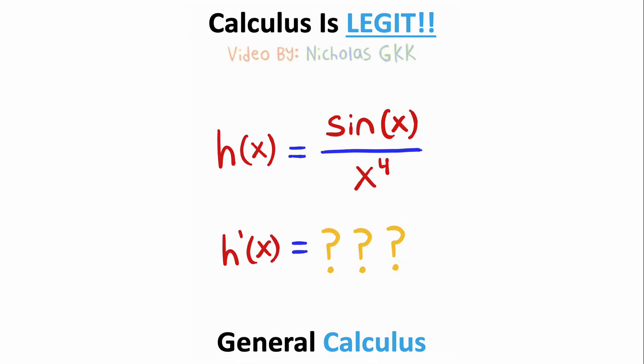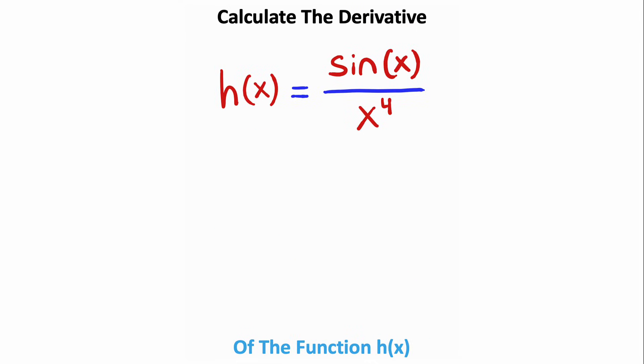Let's see how fast we can solve this calculus problem. We are asked to find the derivative of this function h of x. Now, I notice that we have two functions of x in the top and bottom of a fraction. For these situations, you can use something called the quotient rule, which looks like this.